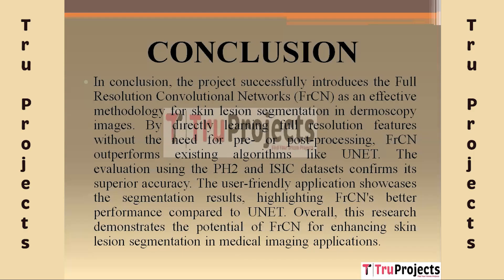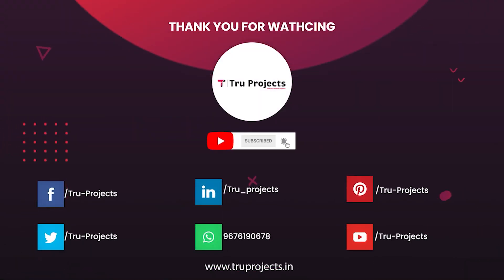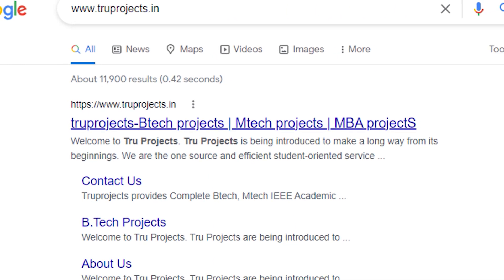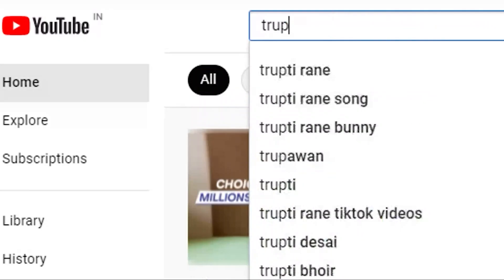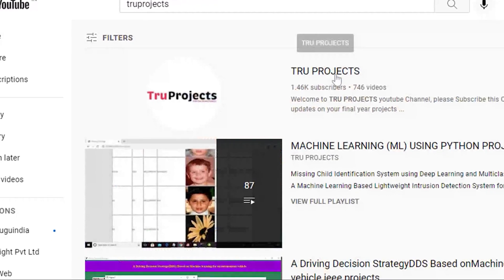In conclusion, the project has been successful in utilizing Full Resolution Convolutional Networks (FRCN) for segmenting skin lesions in dermoscopy images. FRCN outperforms current algorithms like UNet by directly learning full resolution features without the need for pre- or post-processing. Its superior accuracy was validated on both the PH2 and ISIC datasets. Overall, this project shows how FRCN can improve skin lesion segmentation in medical imaging applications. Thank you for watching. For more projects, please visit our website at www.trueprojects.in and subscribe to the TrueProjects YouTube channel.